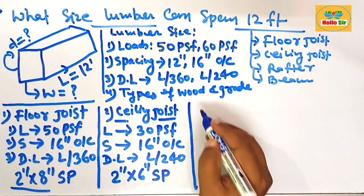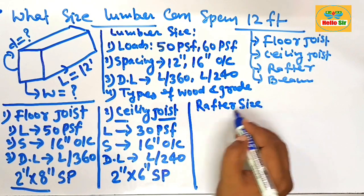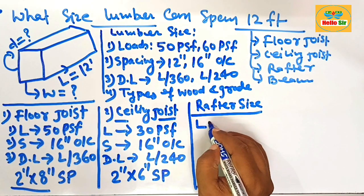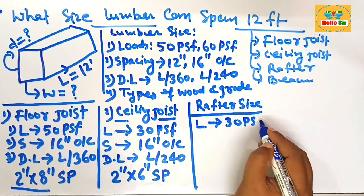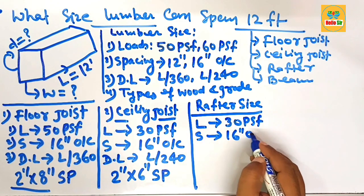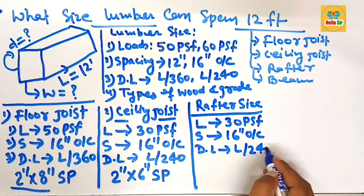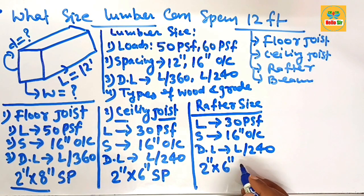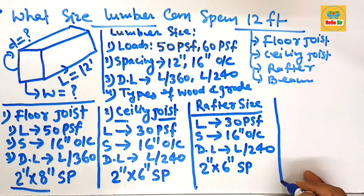For rafter size required to span 12 feet: the rafter carries the roof and snow load, with a load of about 30 pounds per square foot. The spacing between the rafters is 16 inches on center, and the deflection limit is L/240. You should select a 2-inch by 6-inch dimensional lumber of southern pine wood species used as a rafter to span 12 feet.